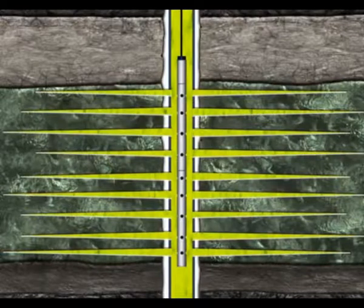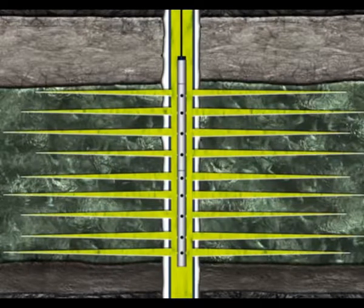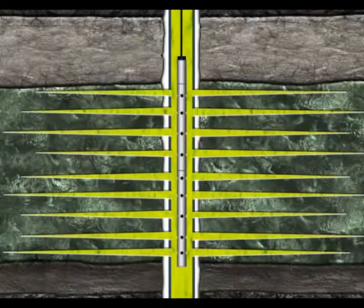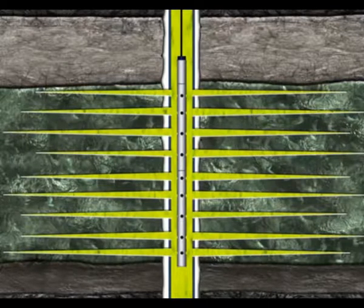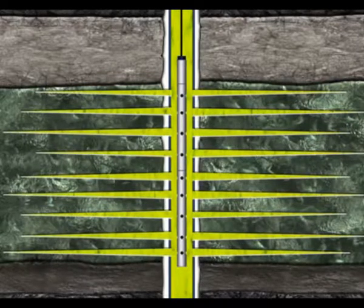The charges in the gun explode, providing a path through the formation, the cement, and the casing to the production tubing. The perforating gun is then pulled out of the hole.